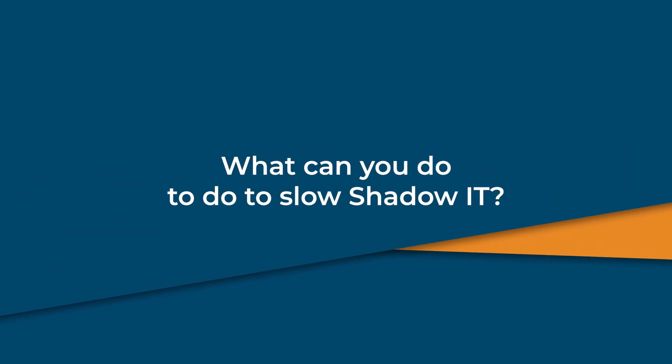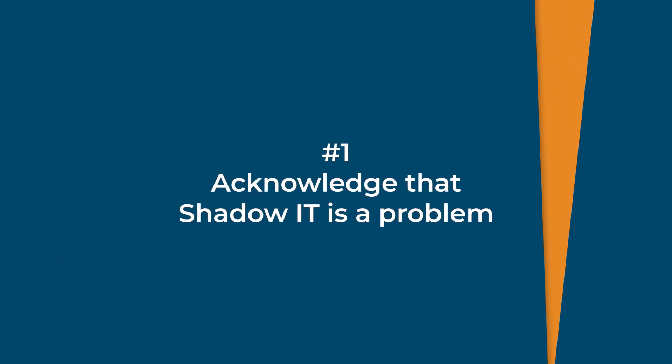What can you do to slow shadow IT? There's really no easy way to get rid of shadow IT in your company. However, there are ways to mitigate how prevalent it becomes inside your organization and prevent problems from happening in the future. Number one, acknowledge that shadow IT is a problem. The first step is to acknowledge that it needs to be resolved. You can't get rid of shadow IT if you turn a blind eye to it. You need to accept that it conflicts with your security efforts and that there is a better way of improving your team's productivity with the help of your IT.